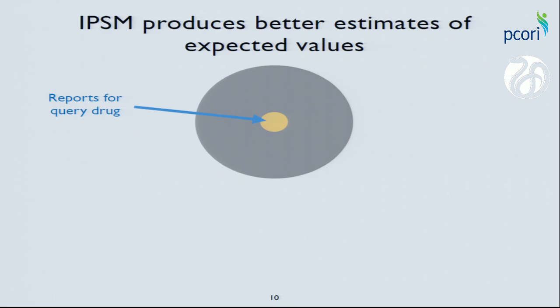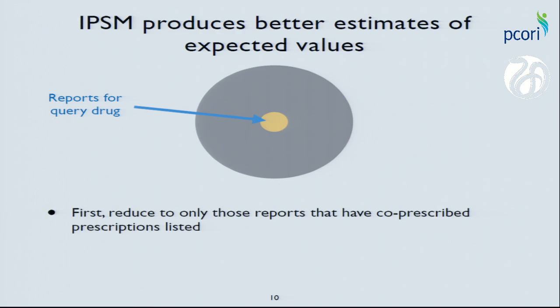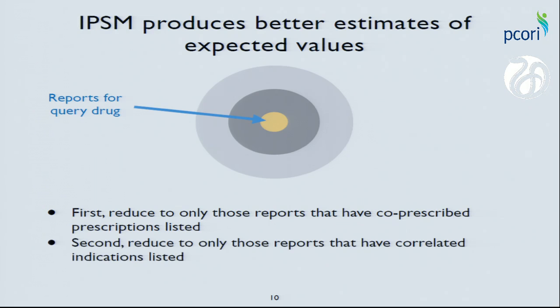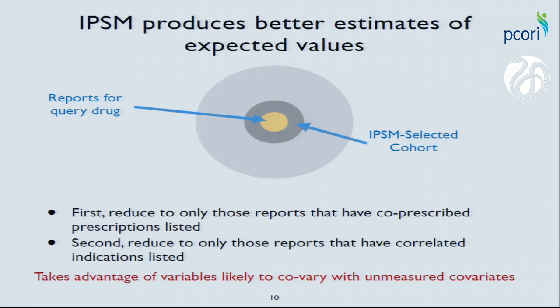Here in the center of this bullseye in gold we have the reports for the query drug of interest. All other reports could be all other patients in your electronic health records or all other adverse drug event reports. First, we reduce to only those reports with significantly co-prescribed prescriptions listed, then further to only those with significantly correlated indications listed. This reduces the number of reports usable as controls, and that set of reports is less biased relative to our cases — taking advantage of the natural co-variances that exist in that enormous data set.